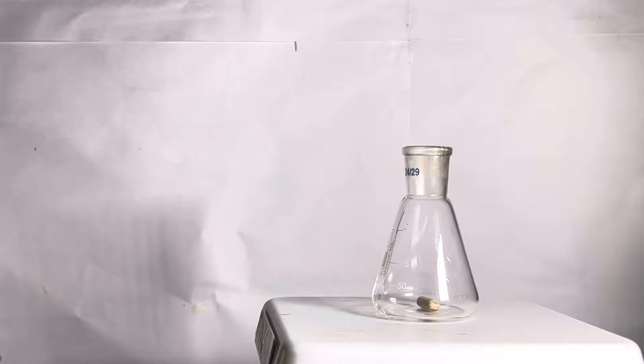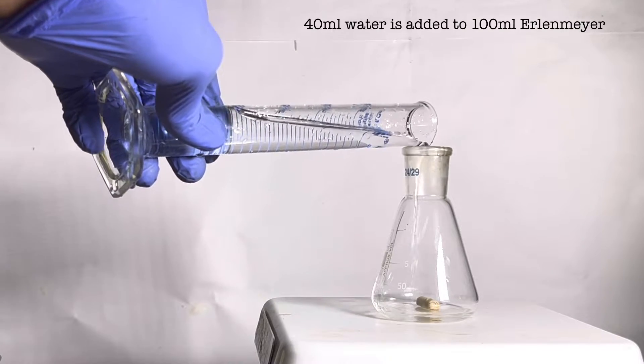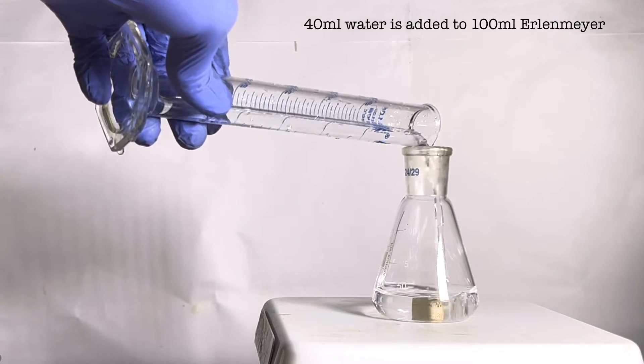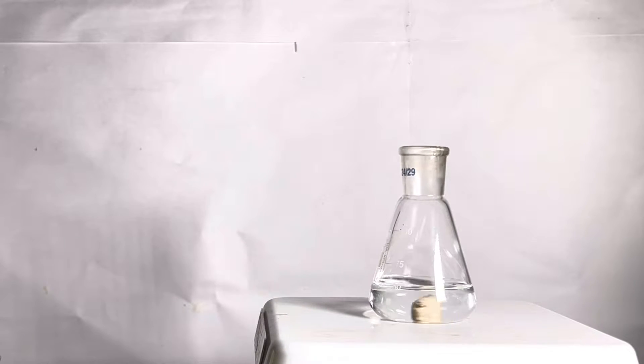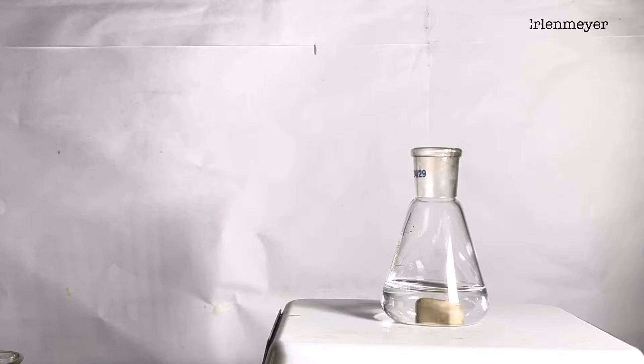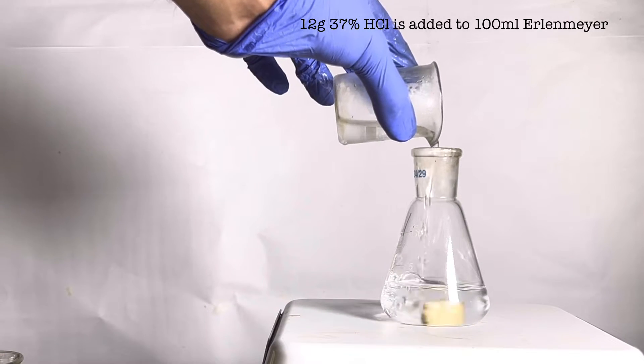Start by placing a 100 ml Erlenmeyer flask on a hot plate stirrer with a stirring bar inside. 40 ml of water was added in it. Stirring was turned on and 12 grams of concentrated 37% hydrochloric acid was added to it. This would make a dilute solution of hydrochloric acid.